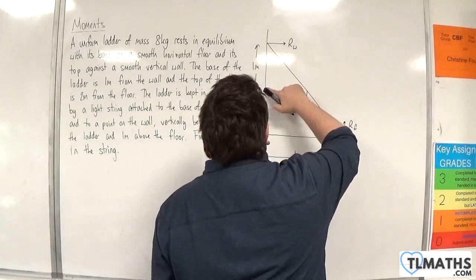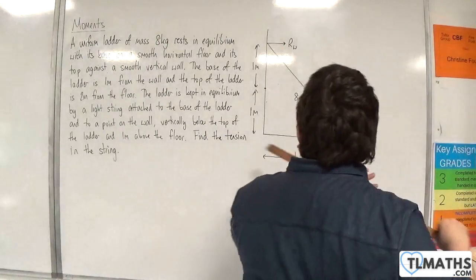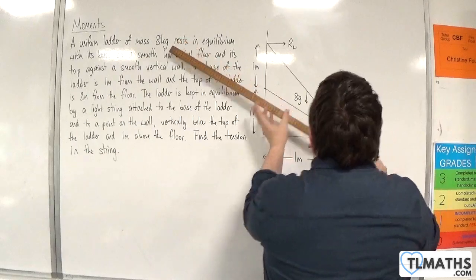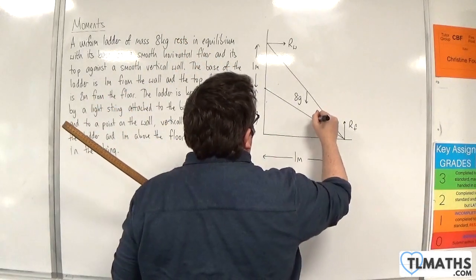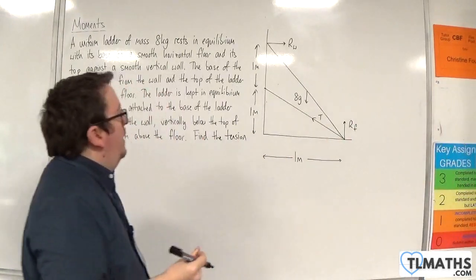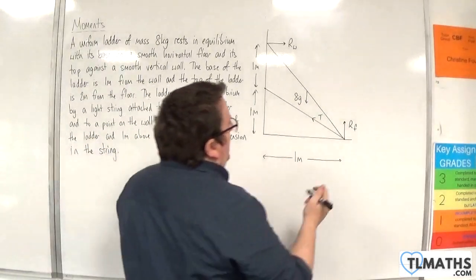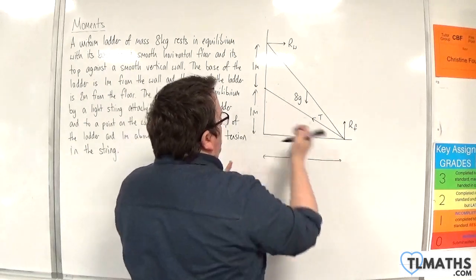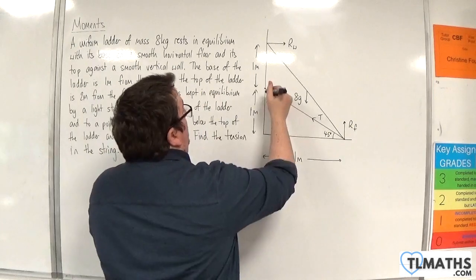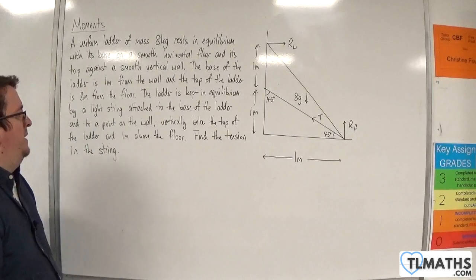I should probably have used a ruler for that bit. Let's use my ruler. And of course there will be tension in the string. Now, although my triangle isn't perfectly isosceles here, it would have to be, because that's 1 metre by 1 metre, so this is going to be 45 degrees, and so that would also be 45 degrees. And that will probably come in useful at some point.